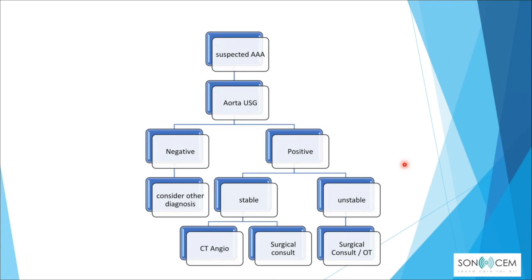For the abdominal aortic aneurysm algorithm: in a patient suspected of having triple A, proceed with aortic ultrasound. If negative, consider other diagnoses. If positive, assess hemodynamic stability. If unstable, obtain surgical consultation and transfer to the operating theater as soon as possible. If stable, a CT angiography of the thoracic or abdominal aorta or surgical consultation can be arranged.